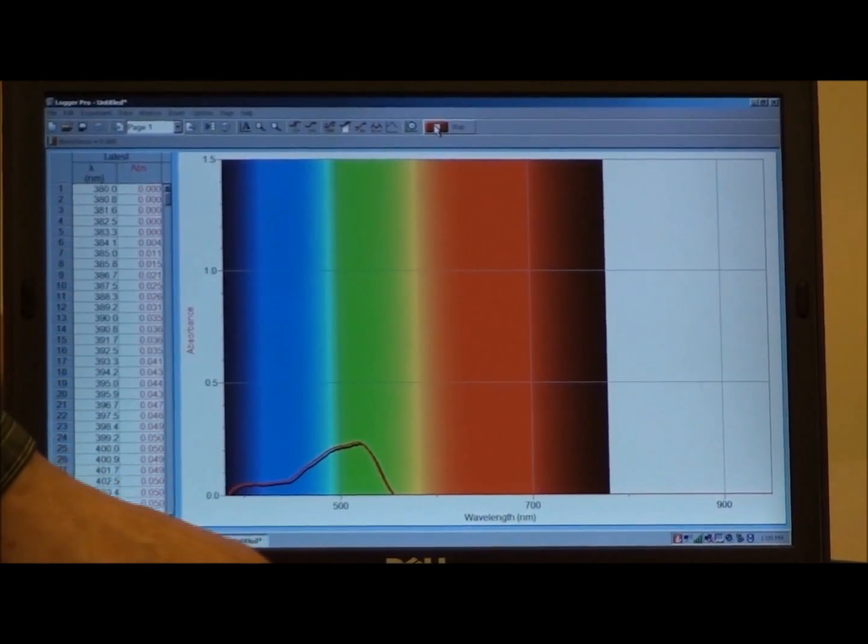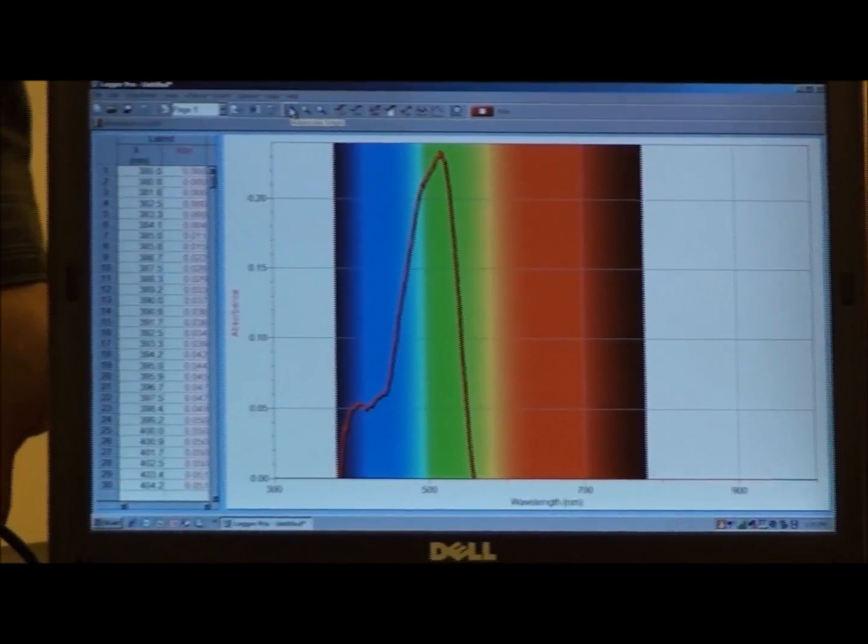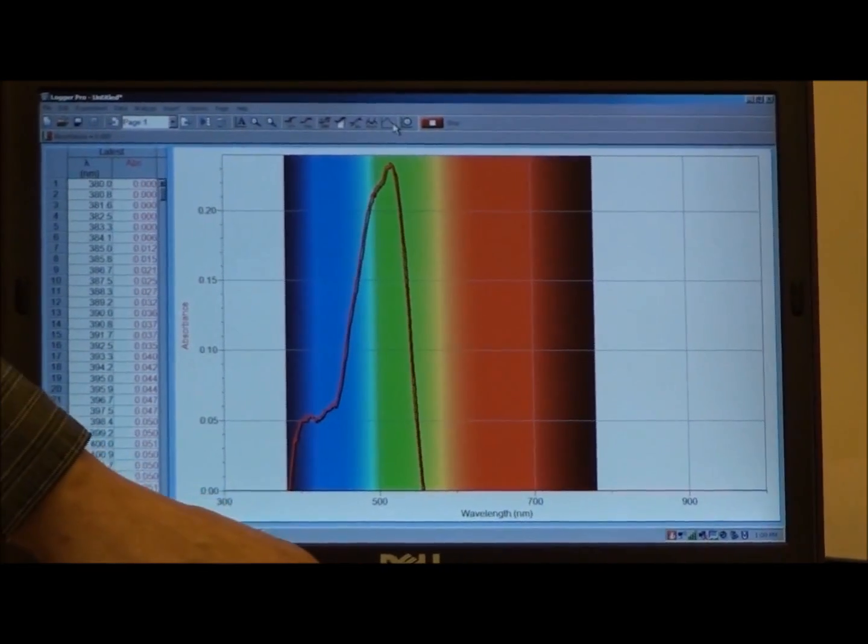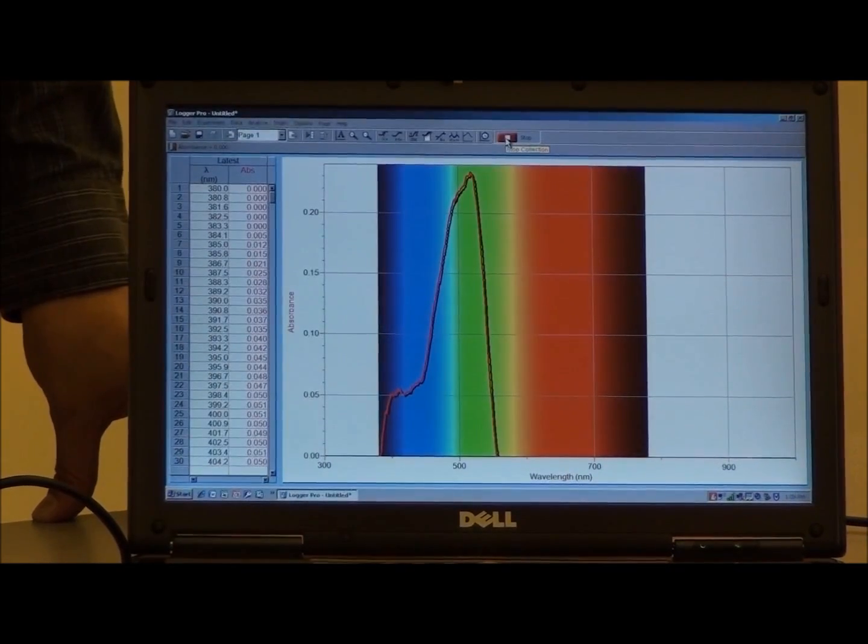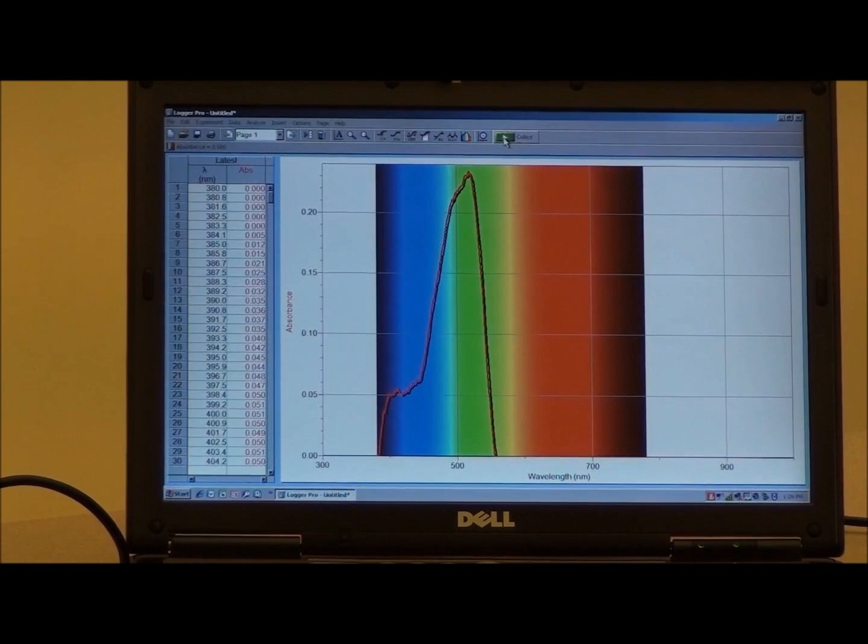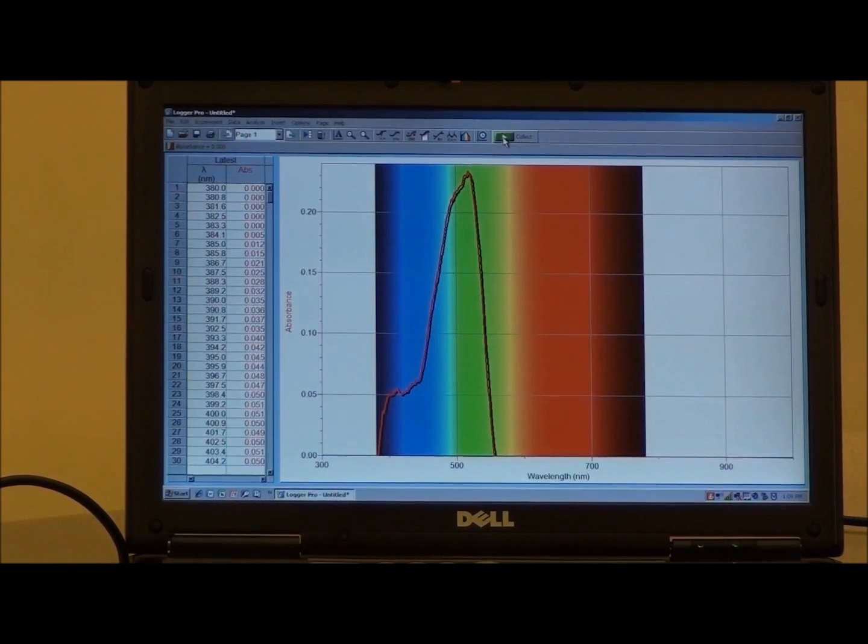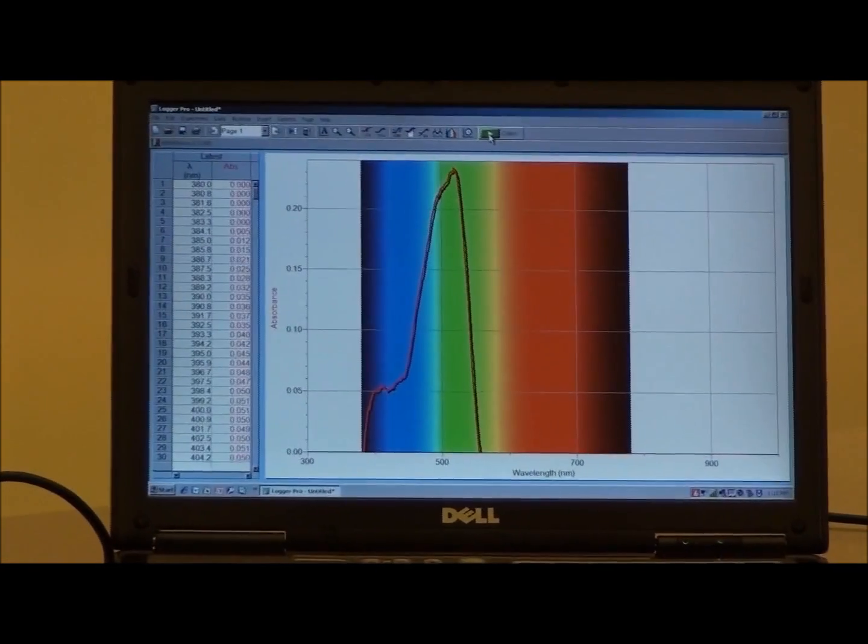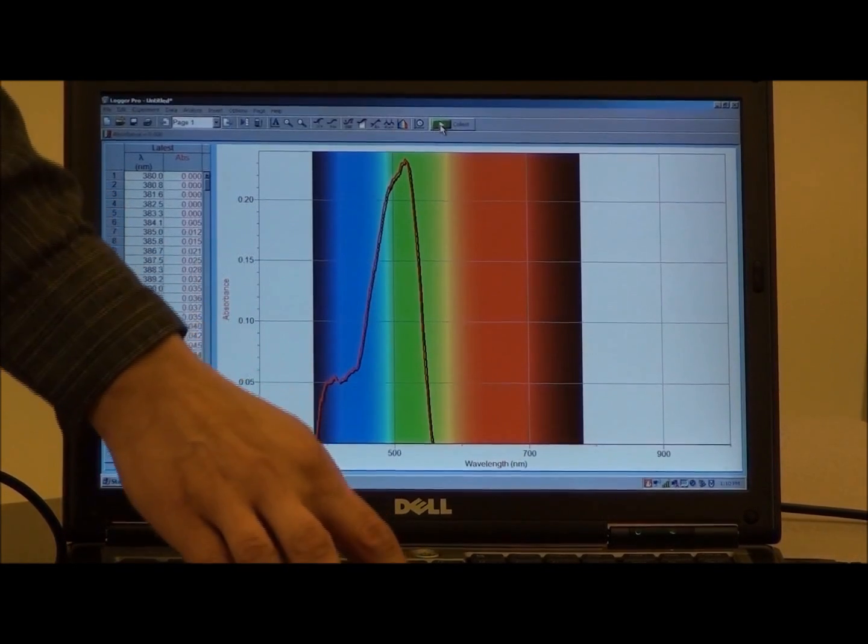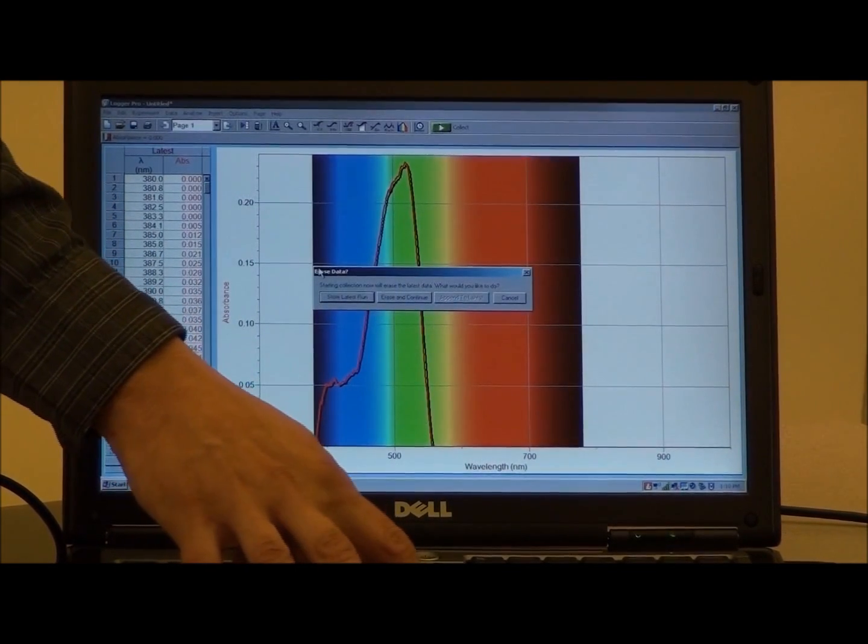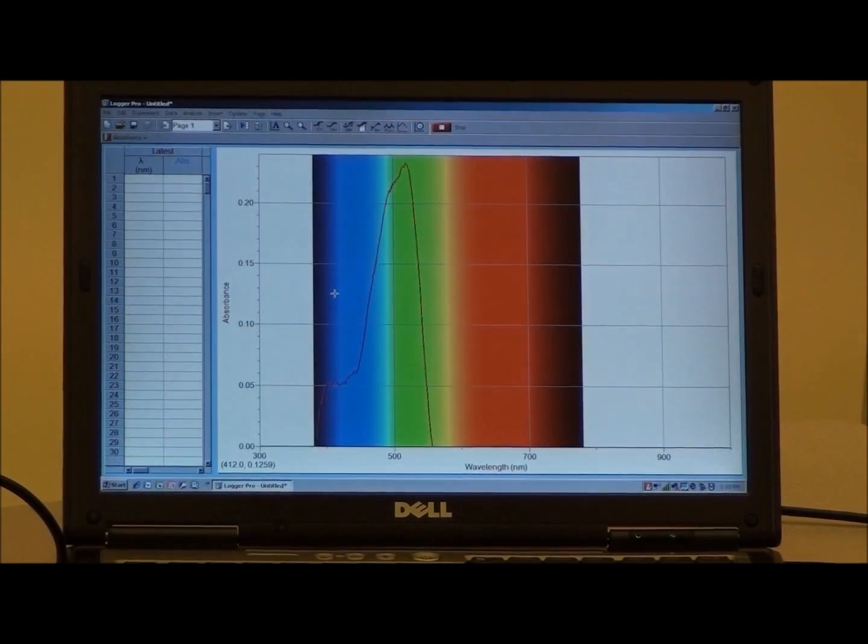To help us view this data better, I will turn on the auto display or auto scale function. And we see that the peak becomes a little nicer to look at. I will now stop the data collection, but I want to keep the data on the screen so that I can compare it to the next solution that we will measure.